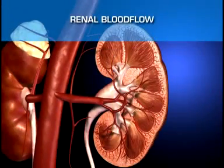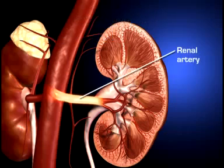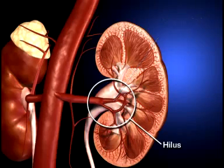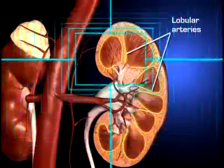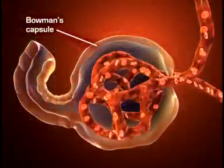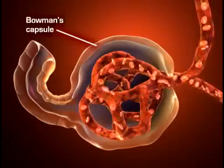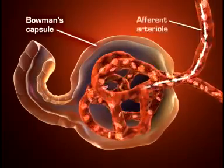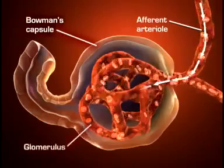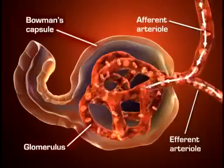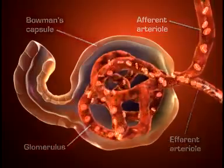Each kidney is supplied with blood by a single renal artery that arises on its respective side of the aorta before dividing into five segmental arteries that enter the hilus. Within the kidney, each segmental artery branches into several lobular arteries. The lobular arteries further subdivide to form interlobular arteries, which branch off into afferent arterioles. Blood flows into the glomeruli through the afferent arterioles, and out of the glomerulus through the efferent arteriole. The afferent and efferent arterioles regulate glomerular capillary pressure by selectively dilating or constricting.